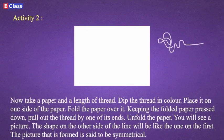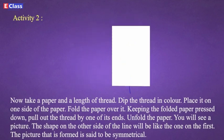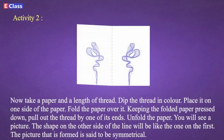Activity 2: Now take a paper and a length of thread. Dip the thread in color. Place it on one side of the paper. Fold the paper over it. Keeping the folded paper pressed down, pull out the thread by one of its ends.